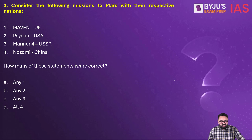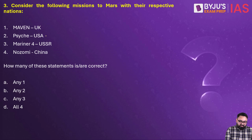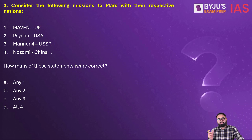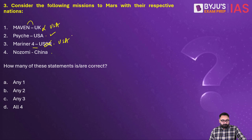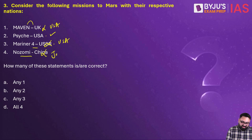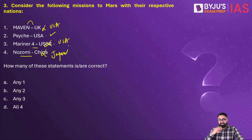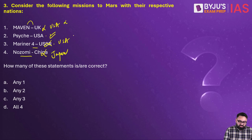Next, question three. Consider the following missions to Mars matched with their respective nations: Maven by UK, Psyche by USA, Mariner 4 by USSR, Nozomi by China — which of these are correctly matched? Maven by UK is wrong — it is by USA. Psyche by USA is correct. Mariner 4 is also actually a US mission only. Nozomi is by Japan — it was a failed mission. Out of these four, only the second one, Psyche by USA, is correctly matched. The answer is A.